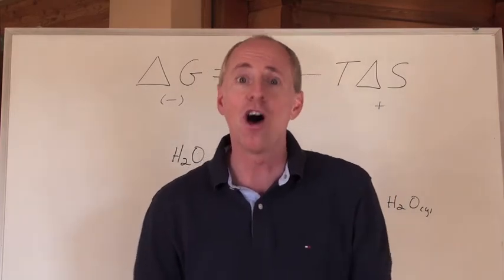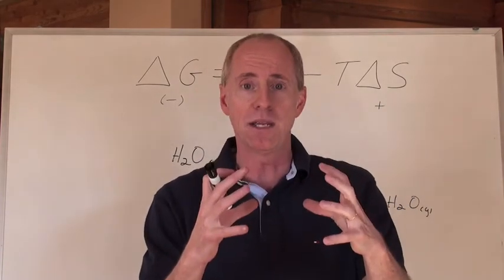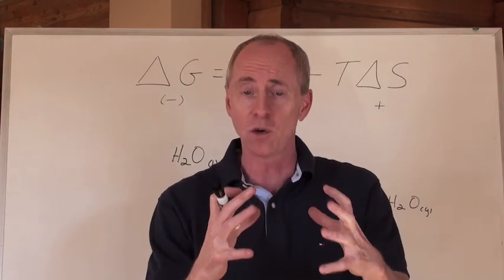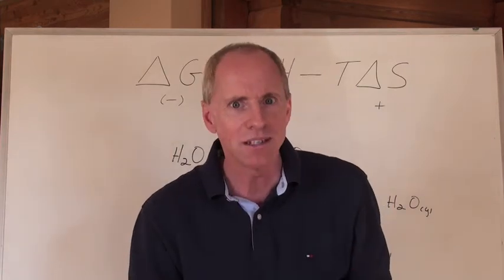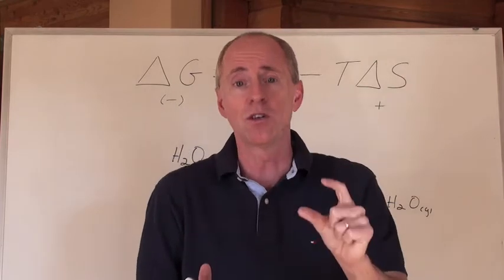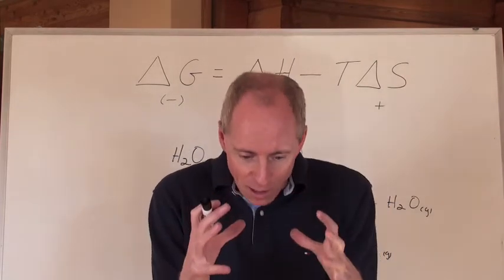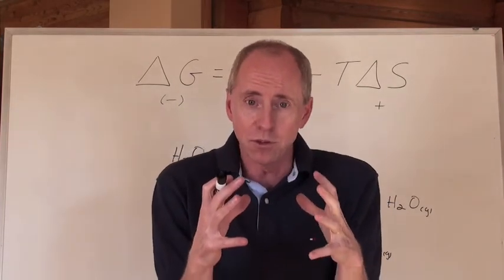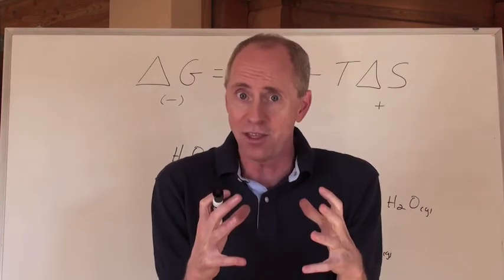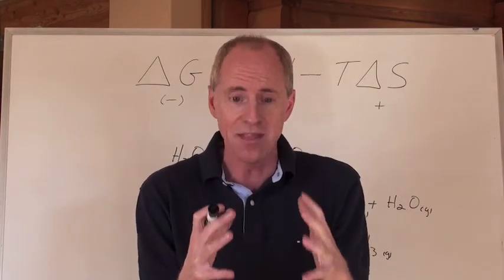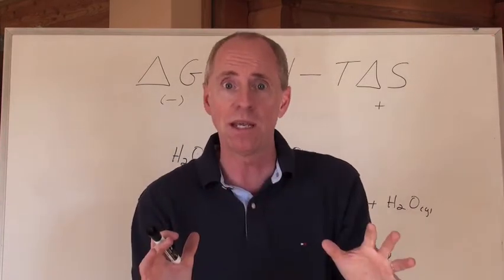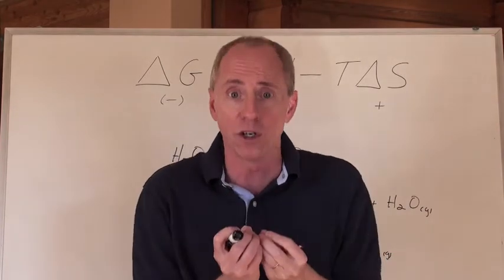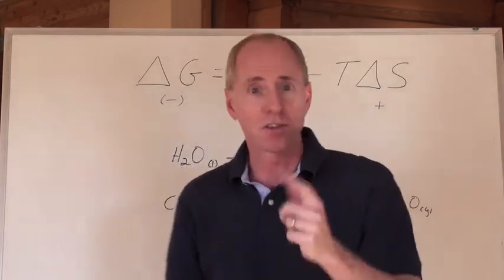And by the way, the third law of thermodynamics is the entropy of a perfect crystal at zero Kelvins is zero. Do you know what that means? That means that if you could cool something to zero Kelvins, everything about that substance would be absolutely perfectly crystallized, nothing moving, no electrons moving, and you've got no entropy at all because everything is in perfect order. So that's the third law of thermodynamics.